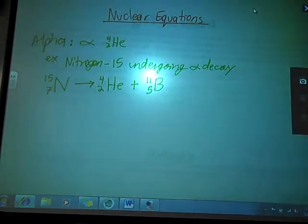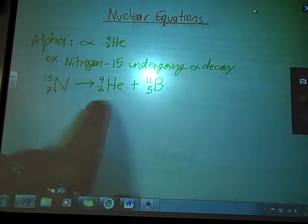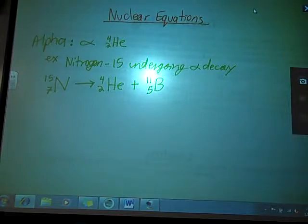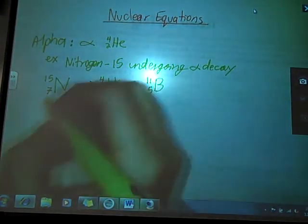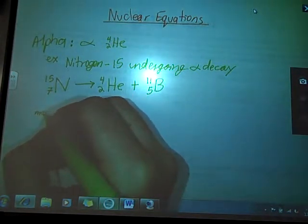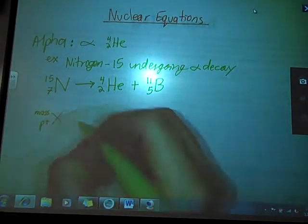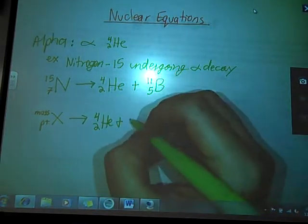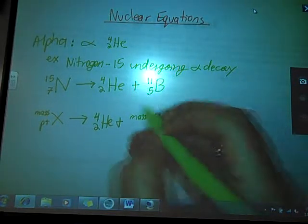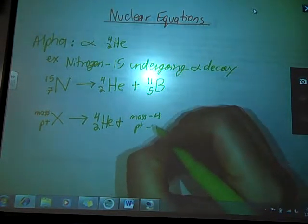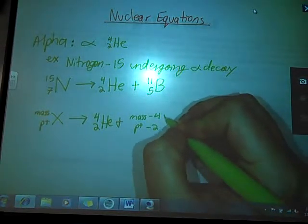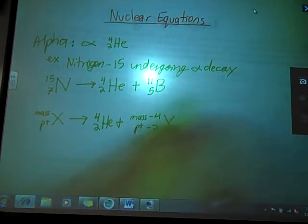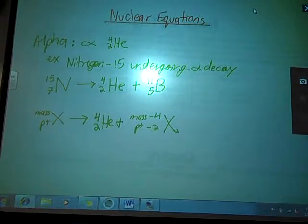So when nitrogen-15 undergoes alpha decay, I create a helium nucleus and a boron-11 atom. The general formula for that: I have my element, whatever it is, mass number on top, atomic number on bottom. It's going to decay into an alpha particle and whatever the mass number is minus 4 and whatever the protons are minus 2 and whatever my new element is. So these are two different nuclei.